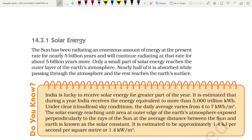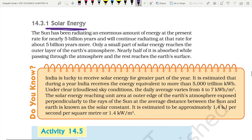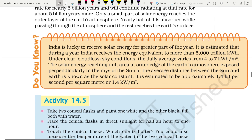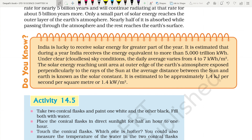An abundant source of energy is solar energy. The sun has been radiating an enormous amount of energy for nearly five billion years and will continue for about five billion more. Only a small part of solar energy reaches the outer layer of Earth's atmosphere — nearly half is absorbed while passing through the atmosphere and the rest reaches Earth's surface. India is lucky to receive solar energy for a greater part of the year. It is estimated that India receives energy equivalent to more than 5,000 trillion kilowatt-hours per year, with daily average varying from 4 to 7 kilowatt-hours per square meter under clear sky conditions.